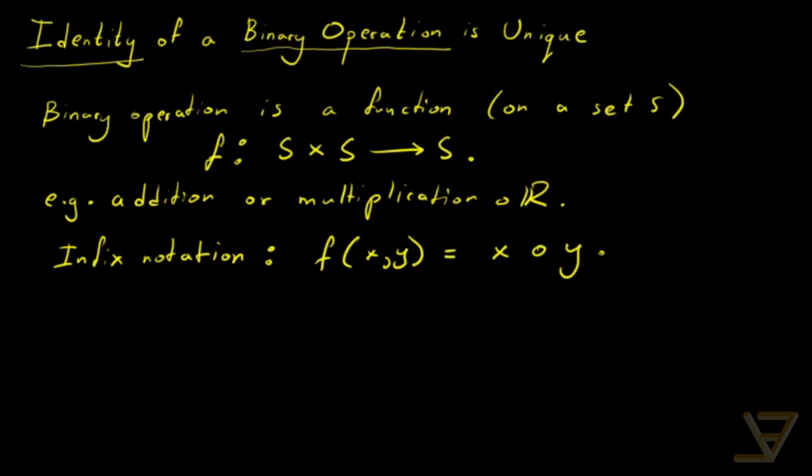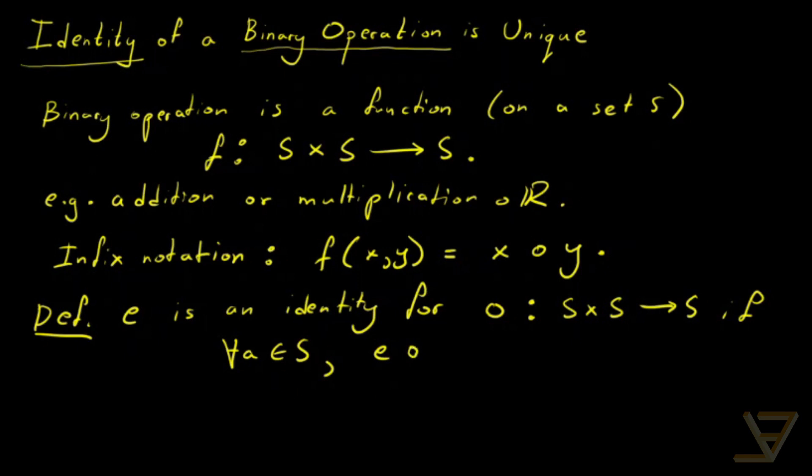Next let's talk about what an identity is. So definition: e is an identity for the function O from S cross S to S if for all a in S, e working with a equals a working with e, which equals a. So basically e has no effect if you put it into the binary operation with any element a. You'll always get back that element a.